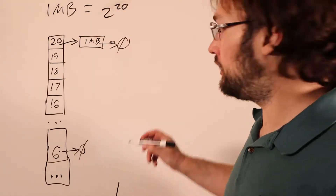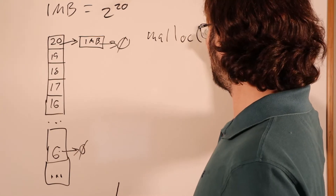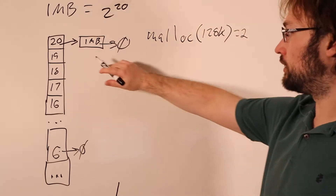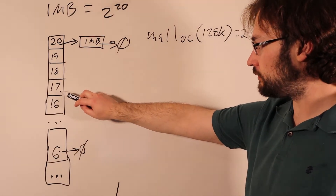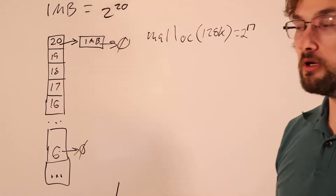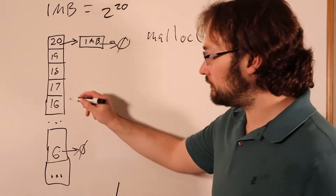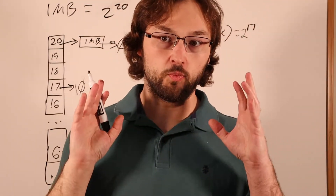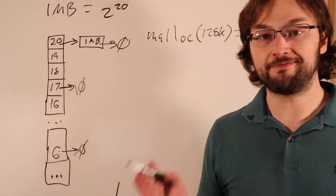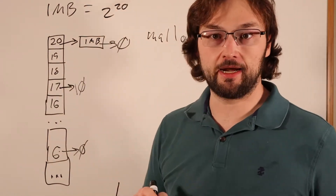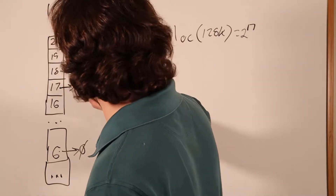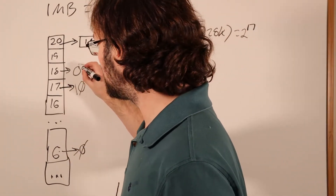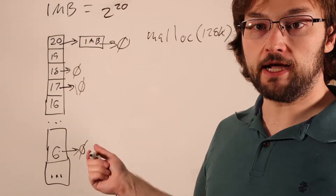Let's say someone calls malloc(128k). We know 128k is 2^17, so we look in slot 17 and discover there are no blocks there — when we initialized the heap, we only put a single one-megabyte block in slot 20. In the buddy system, when we don't find something in a slot, we split an item from the next slot up. We check slot 18 (256k) and that's also empty.